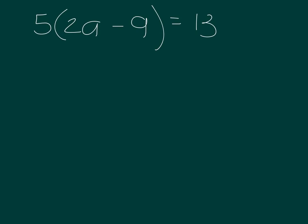First, what I'm telling you is get rid of your brackets. So what do we do? Well, 5 times 2a gives us 10a and 5 times negative 9 gives us negative 45, and that equals 13.